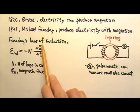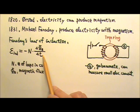So delta phi B over delta T is the rate at which magnetic flux changes.